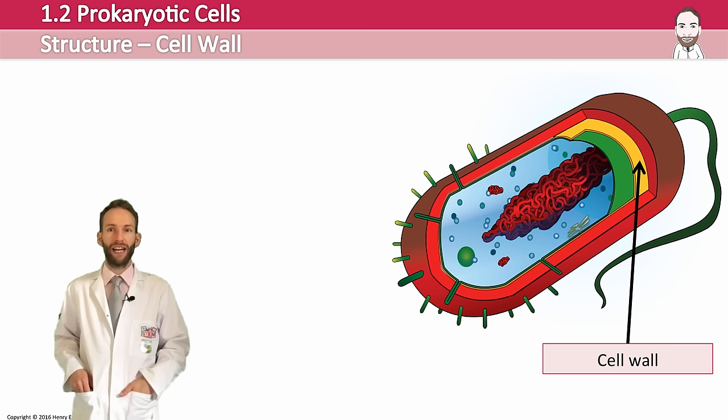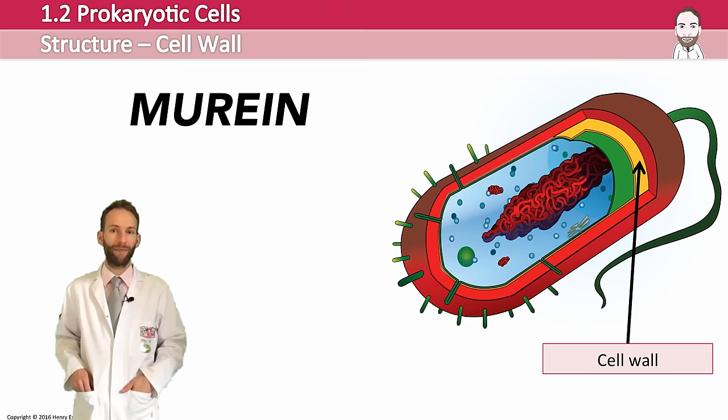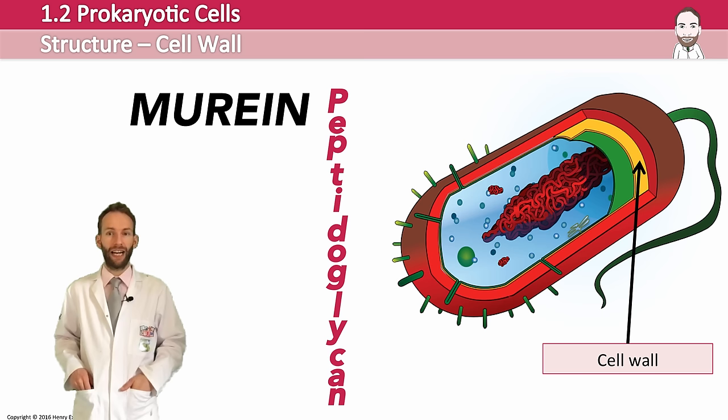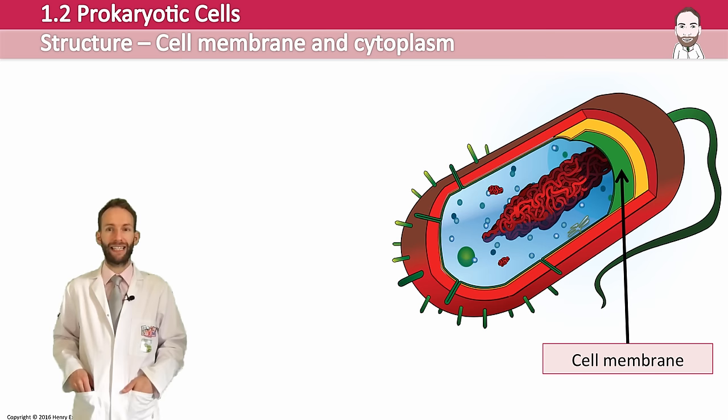Starting with the cell wall: its function is to prevent the cell from bursting and it gives bacteria its shape. It's made of a substance called murein, which is a peptidoglycan — a combination of polysaccharides and proteins. There are actually two types of cell wall, which we'll be discussing later on in this presentation.